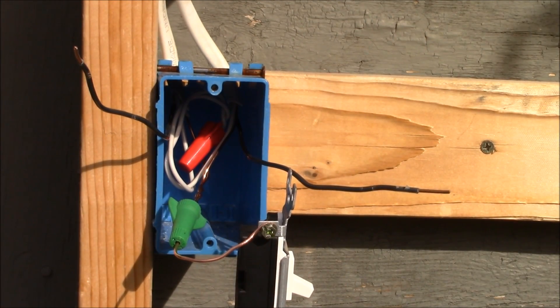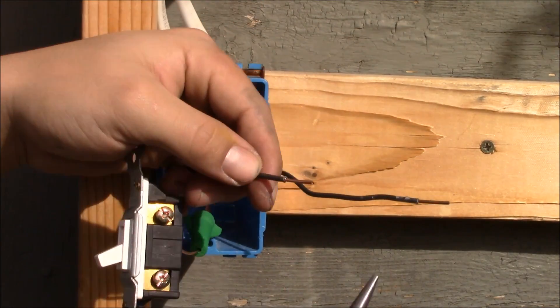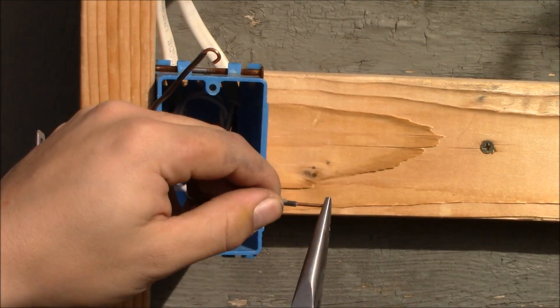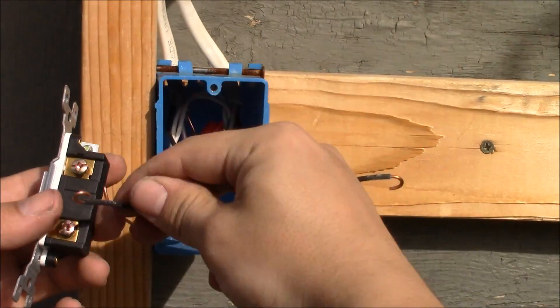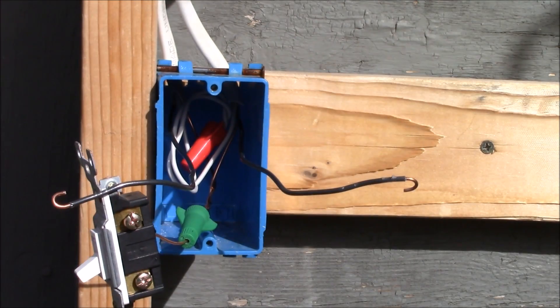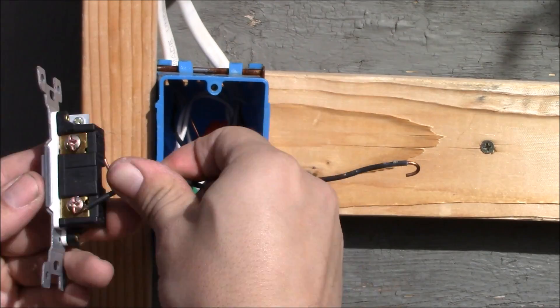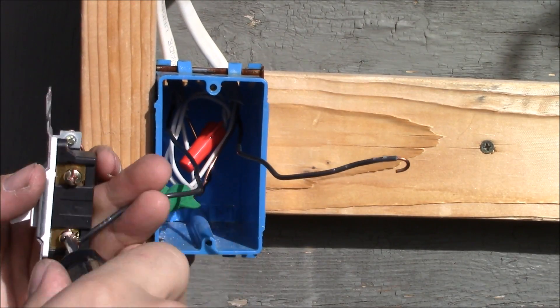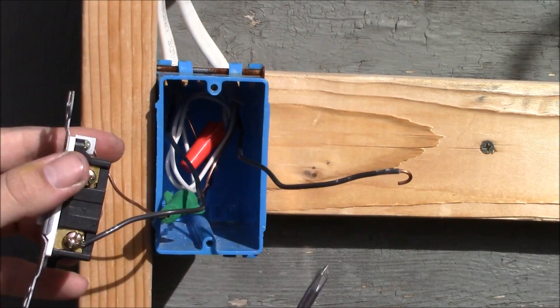Now it's time for the black hot conductors. We have the line wire, which is the wire bringing electrical energy into the system, and the load wire, which is the wire bringing energy to the light. We'll place the line wire on one bronze terminal in a clockwise manner, crimp it, and tighten it down securely.